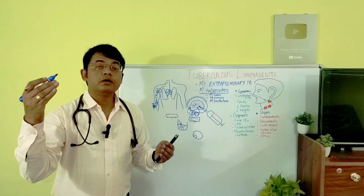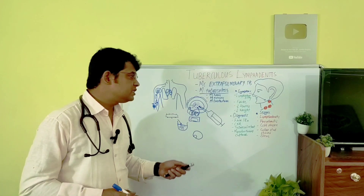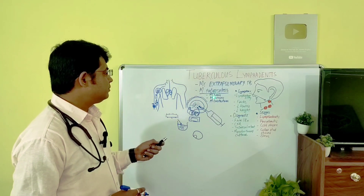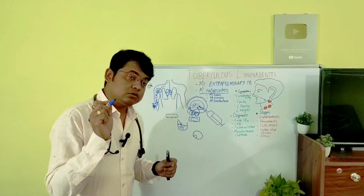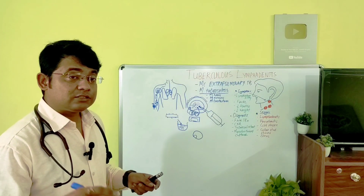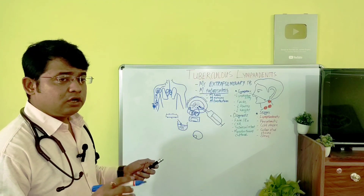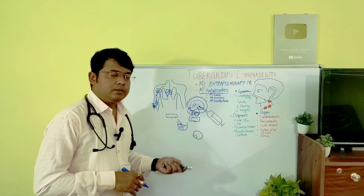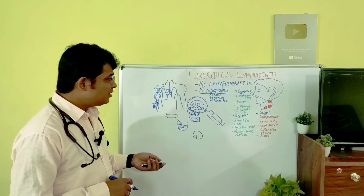Tuberculosis lymphadenitis can also be caused by some other species of tuberculous bacteria: Mycobacterium bovis, Mycobacterium kansasii, and Mycobacterium fortuitum. These are also mycobacteria closely related to the tubercular group of organisms that can cause tubercular lymphadenitis. So we must keep in mind that Mycobacterium tuberculosis is not the only culprit.